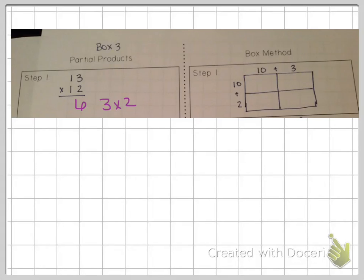For the box method, we're drawing a box to kind of separate our tens from our ones. So I have a box that's divided into four squares, and I've broken my number apart. So I have ten plus three at the top for thirteen, and ten plus two on the side for twelve. This should look pretty similar to the area model.